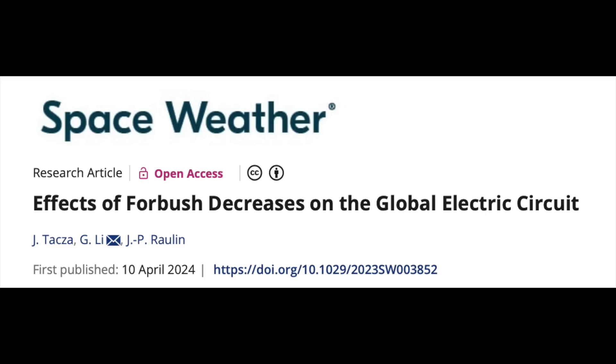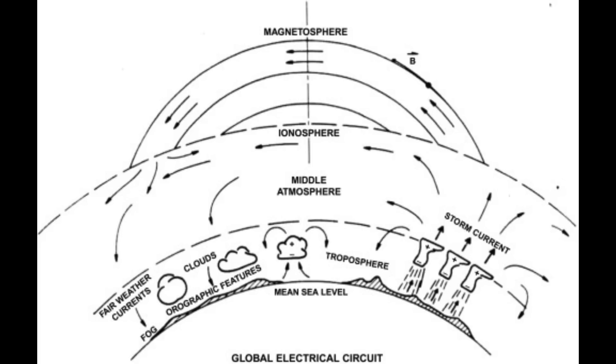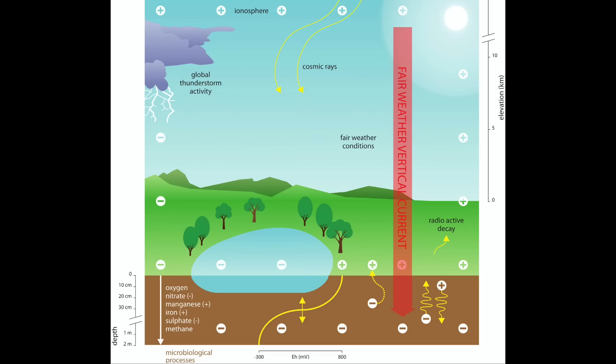This recent article on CME impact for Bush decrease in the global electric circuit. We have seen several articles on this in the past and it works via particle precipitation, geomagnetic excitement, and induced electric currents. These things change the atmospheric potential gradient, the vertical electric currents through the atmosphere, and the charge distribution of everything from the top of the sky to the ground and everything in between.